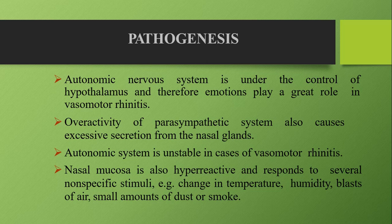Regarding pathogenesis, in vasomotor rhinitis the autonomic nervous system is basically unstable. Whenever there is emotional instability it can lead to symptoms of vasomotor rhinitis. The nasal mucosa is also hyperactive and responds to several non-specific stimuli such as a minor change in temperature, or exposure to small amounts of dust or smoke, causing the patient to develop symptoms of vasomotor rhinitis.